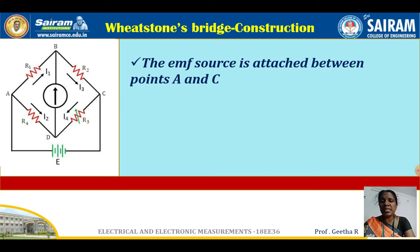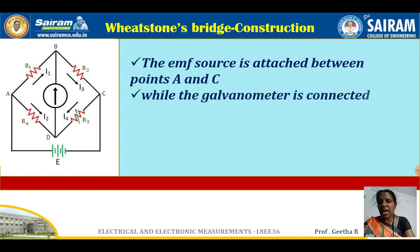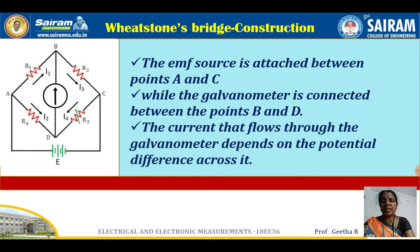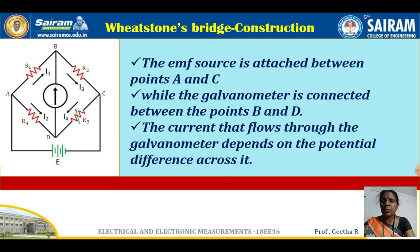The EMF source is connected across points A and C, and the galvanometer is connected across points B and D. This completes the bridge circuit. The current that flows through the galvanometer depends on the potential difference across B and D — whether there is a deflection or current flow depends on that potential difference.